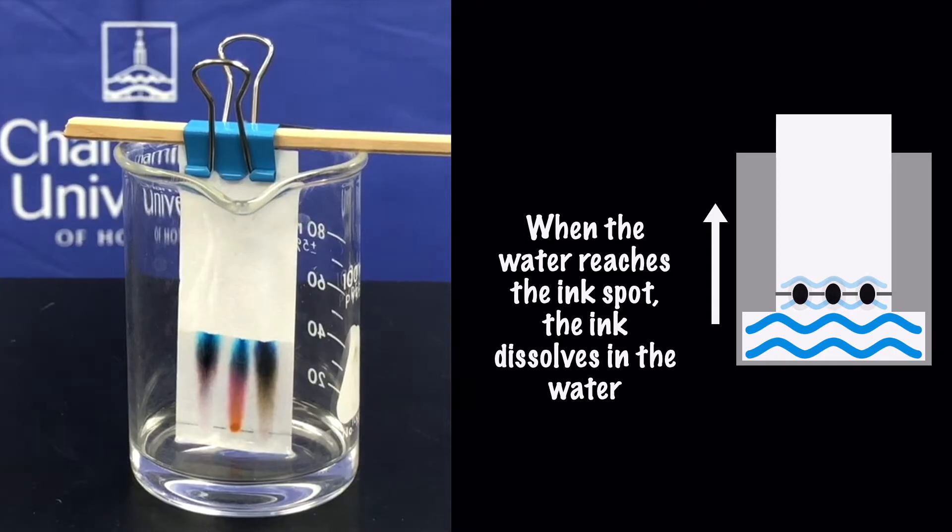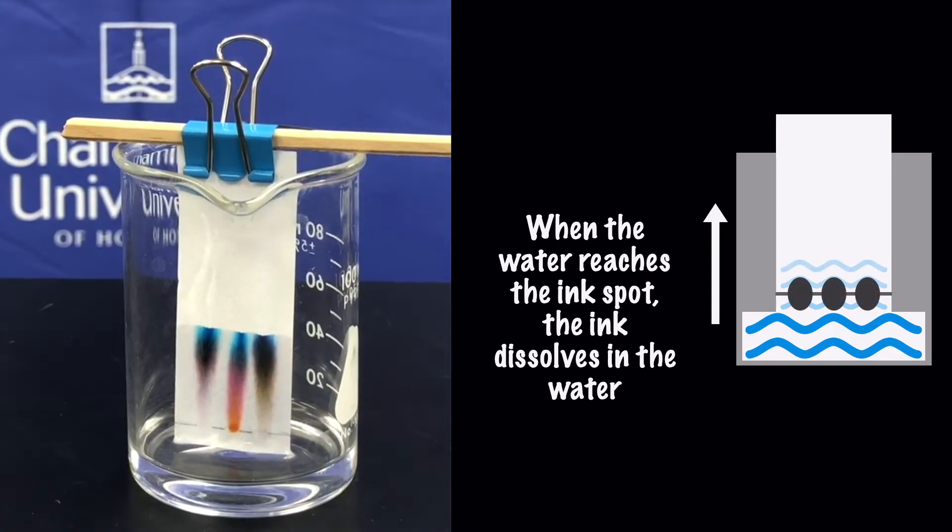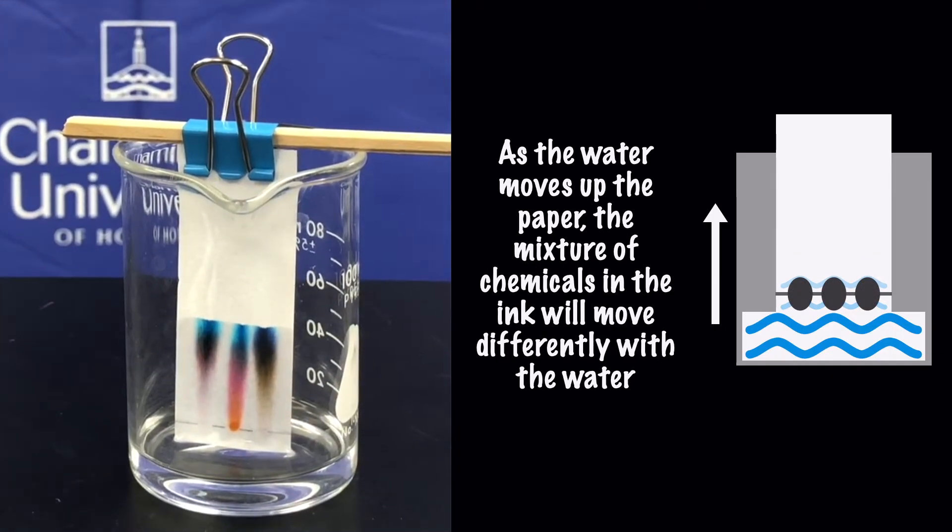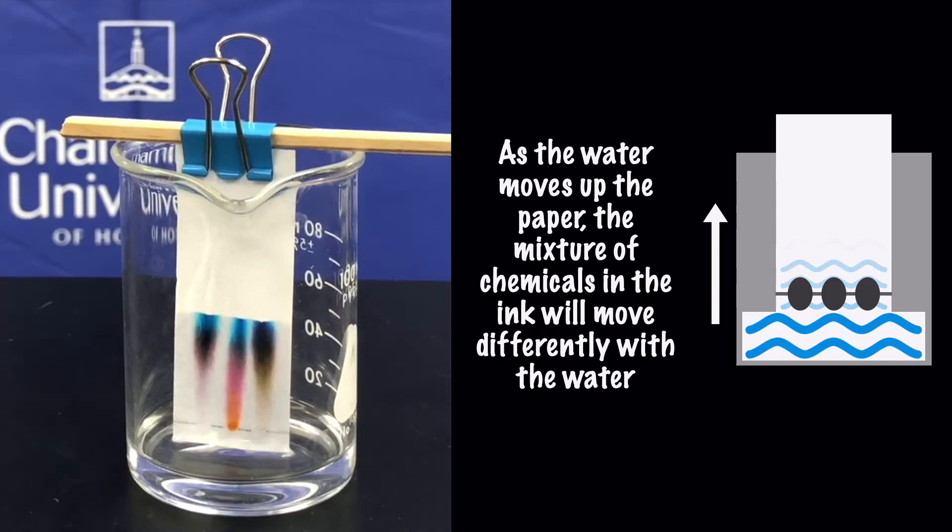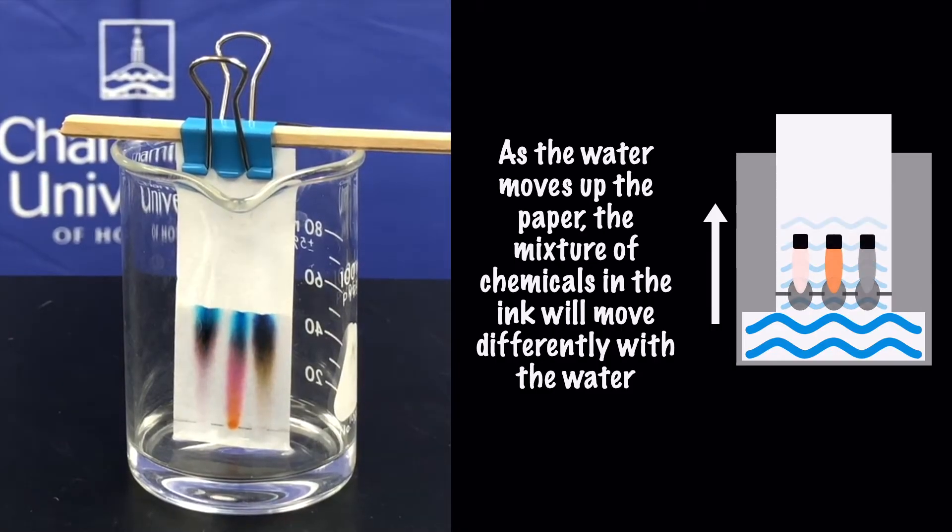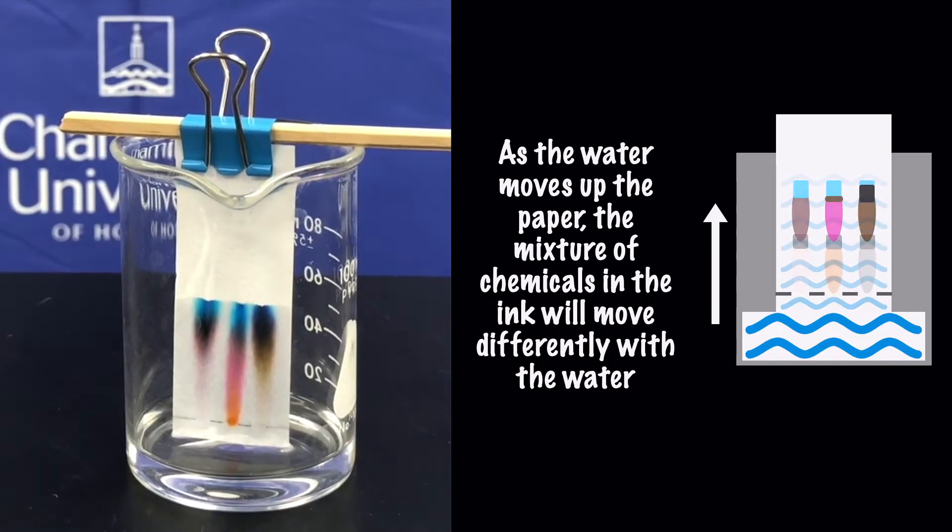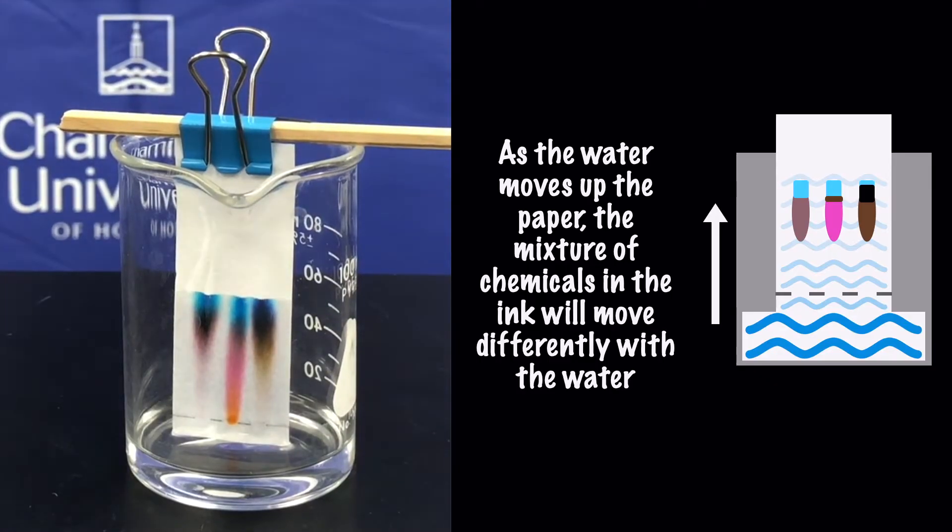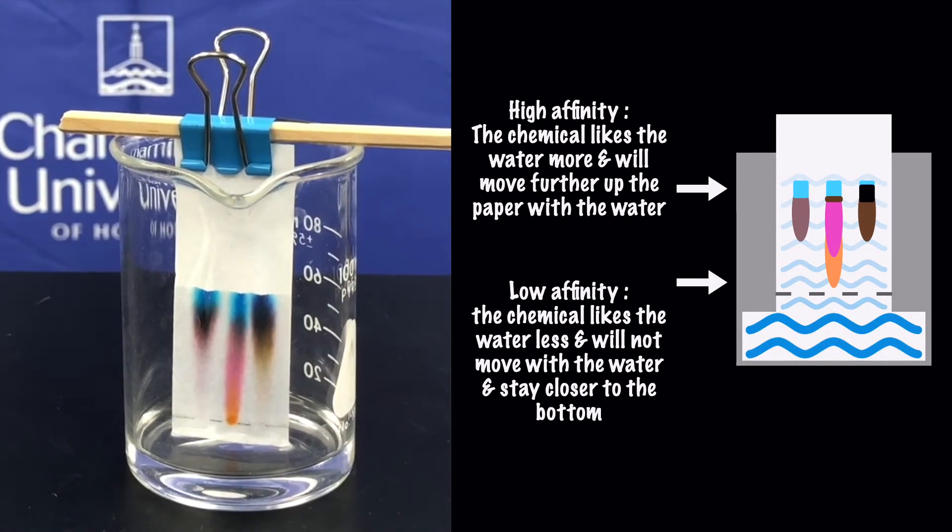When the water reaches the marker that we've spotted, the marker ink dissolves in it. As the water continues up the paper, the mixture of chemicals in the ink will move differently with the water. Some chemicals like the water a lot more than others, so they move at different speeds.